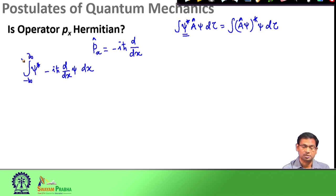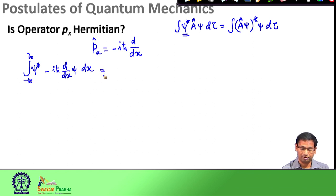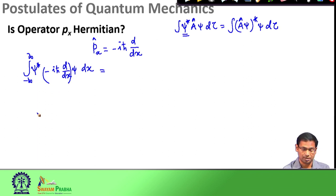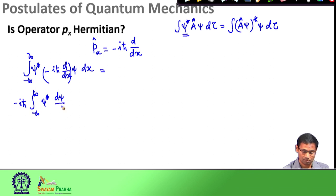We take x from minus infinity to plus infinity and evaluate this integral. This region is our operator. We see that minus i h-bar is a constant, so we take it out of the integration.